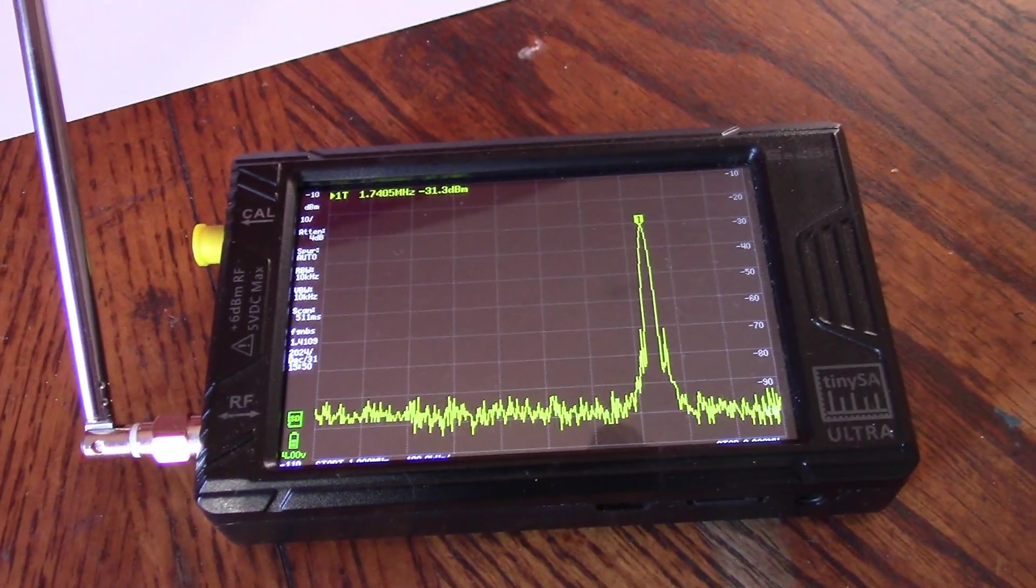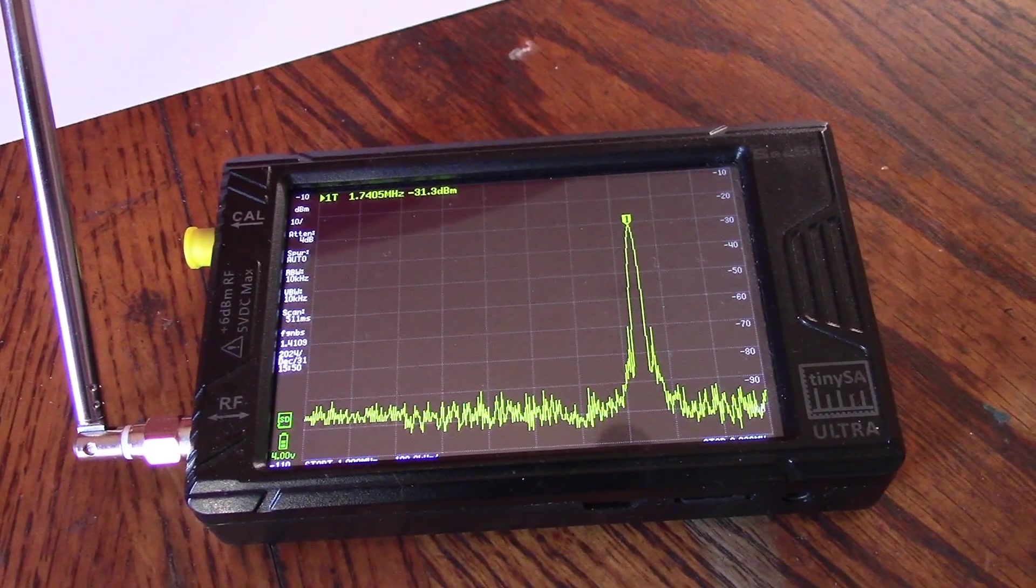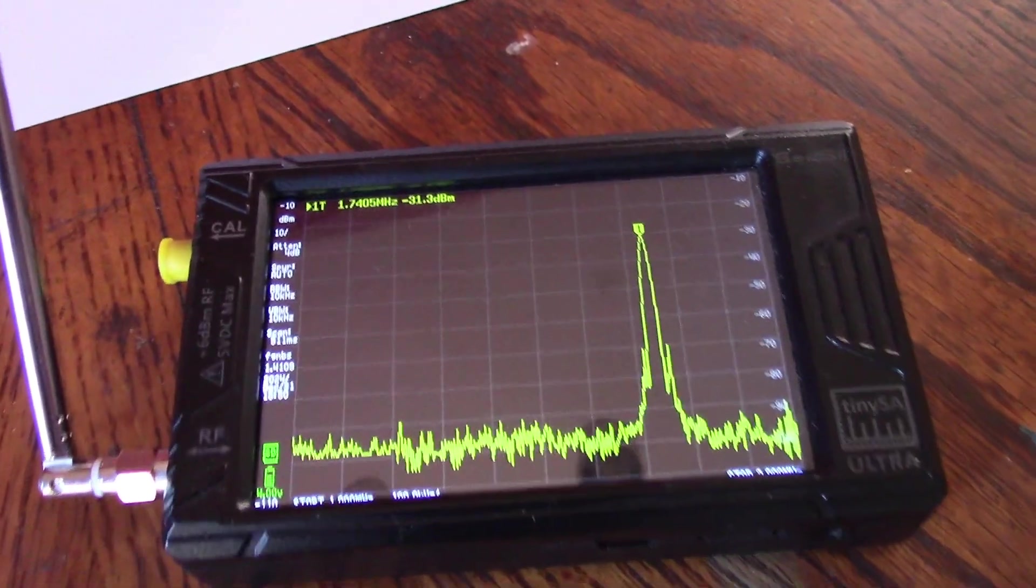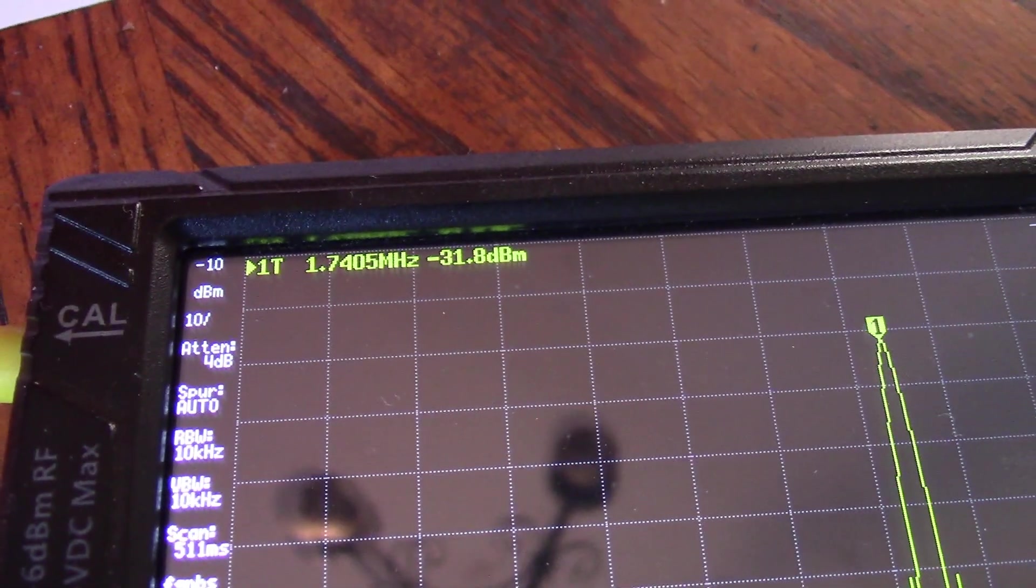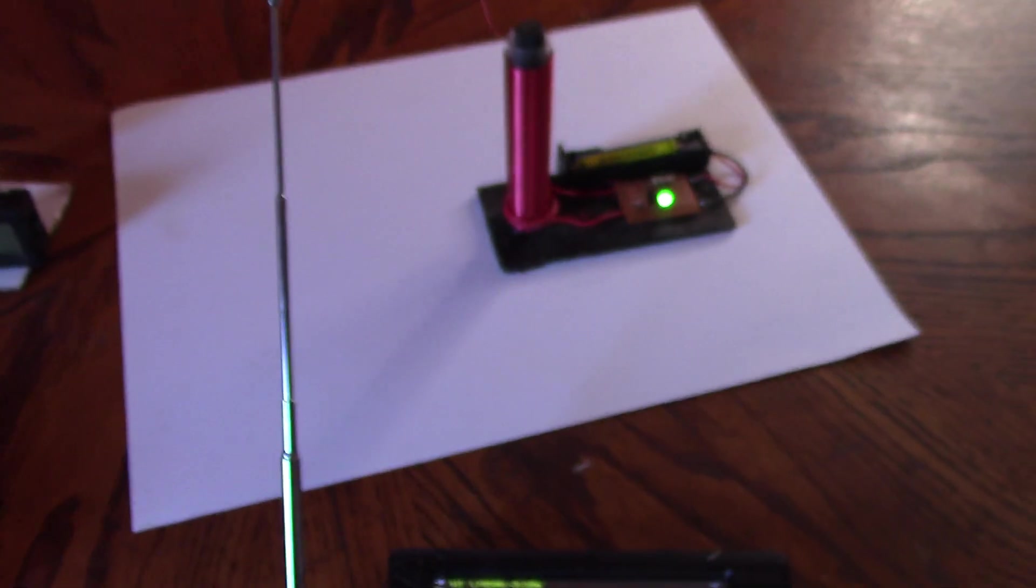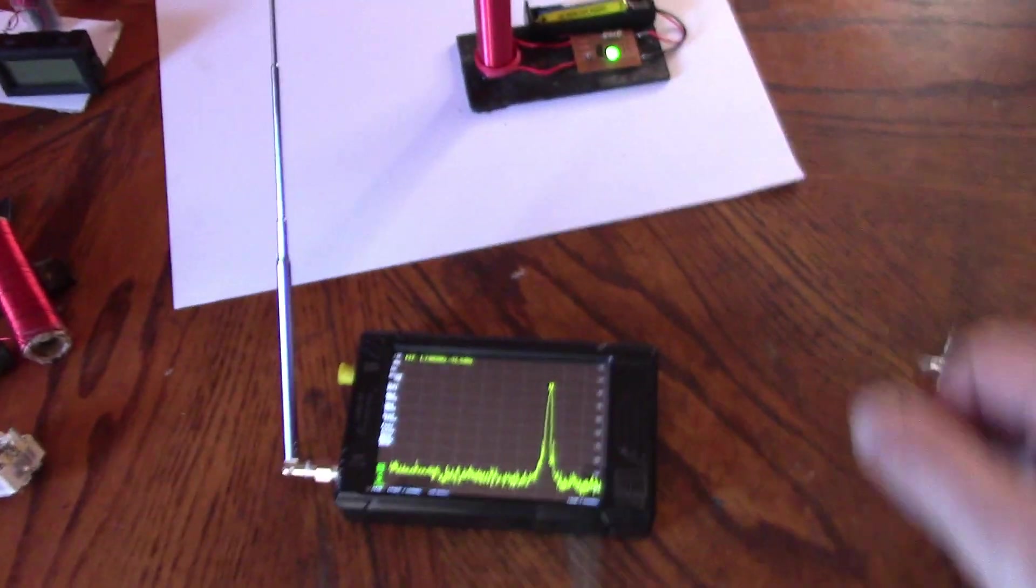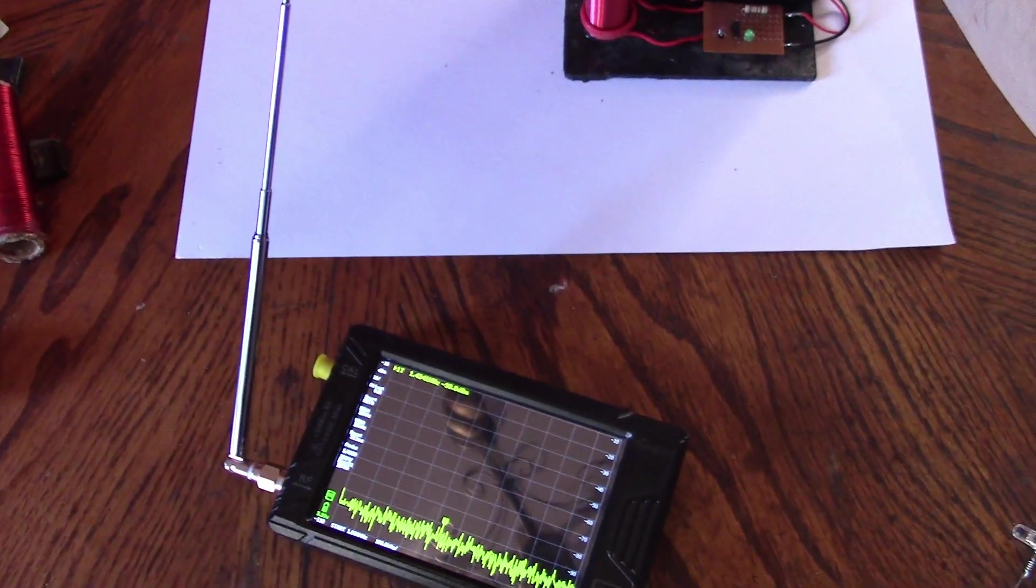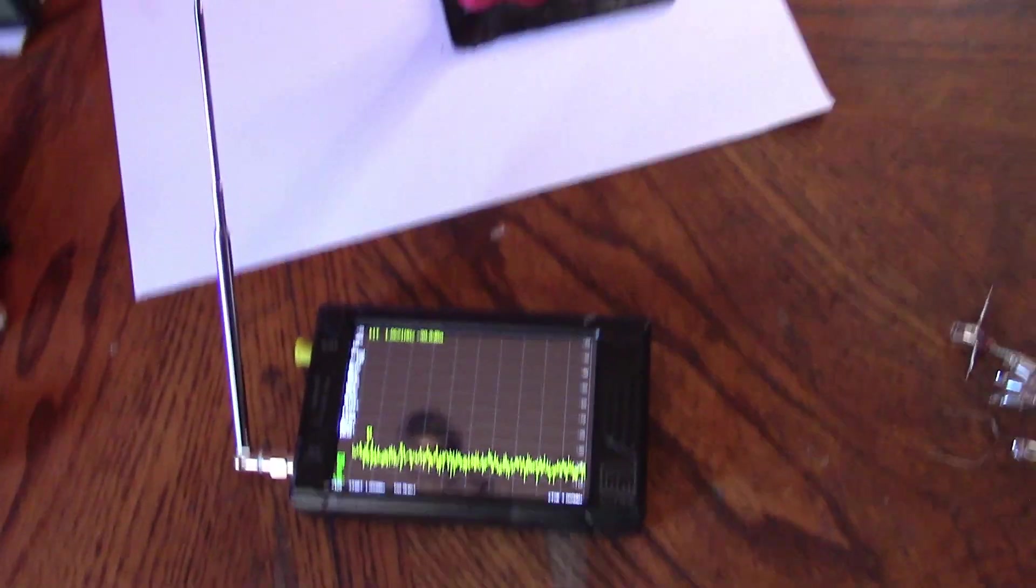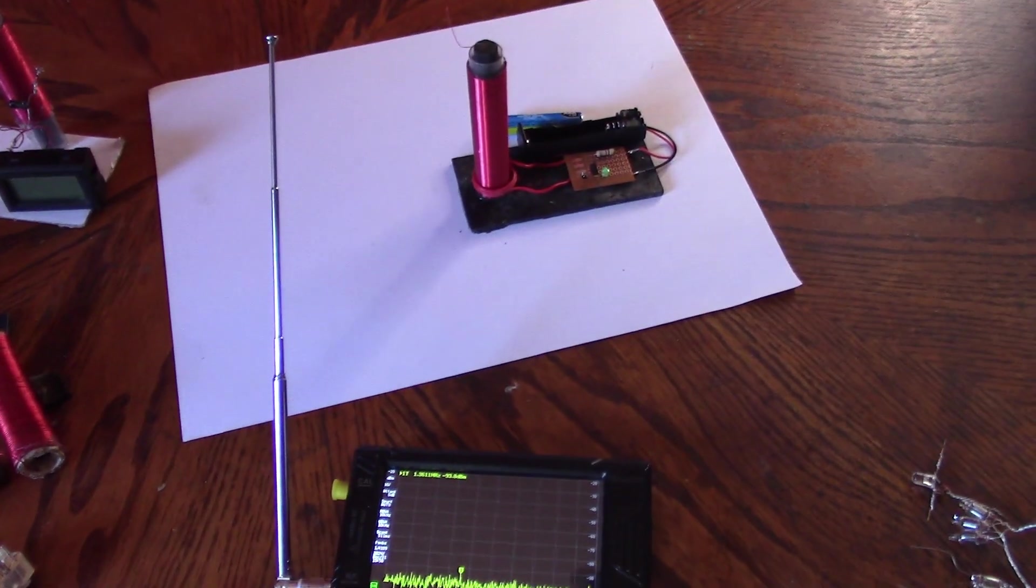This here is a tiny SA Ultra spectrum analyzer, and it's showing that the frequency is about 1.74 MHz. And if I take the battery out, we'll see that spike will disappear. There we go. So yeah, 1.74 MHz is the operating frequency.